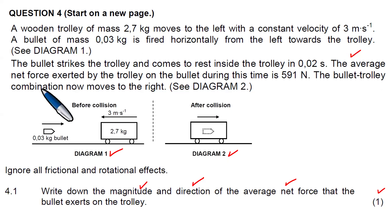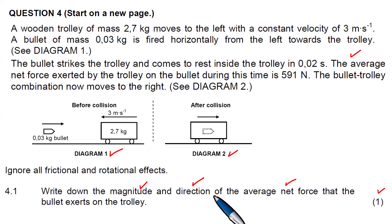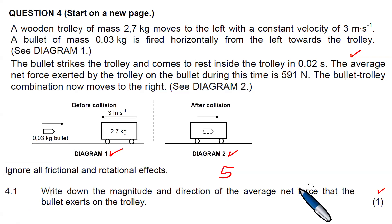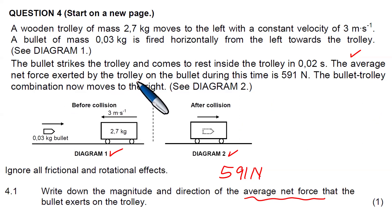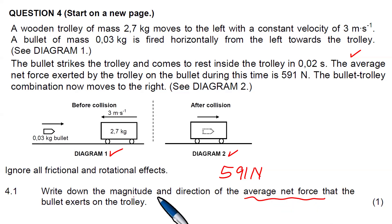The answer is already in the story — the average net force exerted by the trolley on the bullet during this time is 591 Newtons. To write down the magnitude and direction of the average net force that the bullet exerts on the trolley, we apply Newton's third law: the force exerted by the bullet on the trolley is in the opposite direction, so it is 591 Newtons to the right.